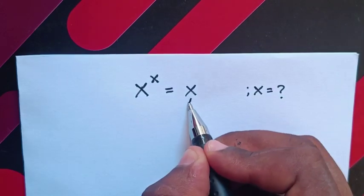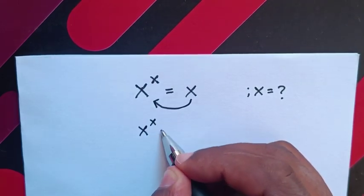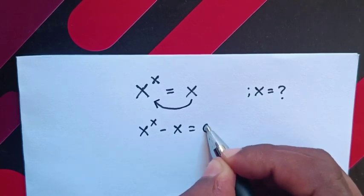So, first we take this x to the left side, then it will be x^x - x = 0.